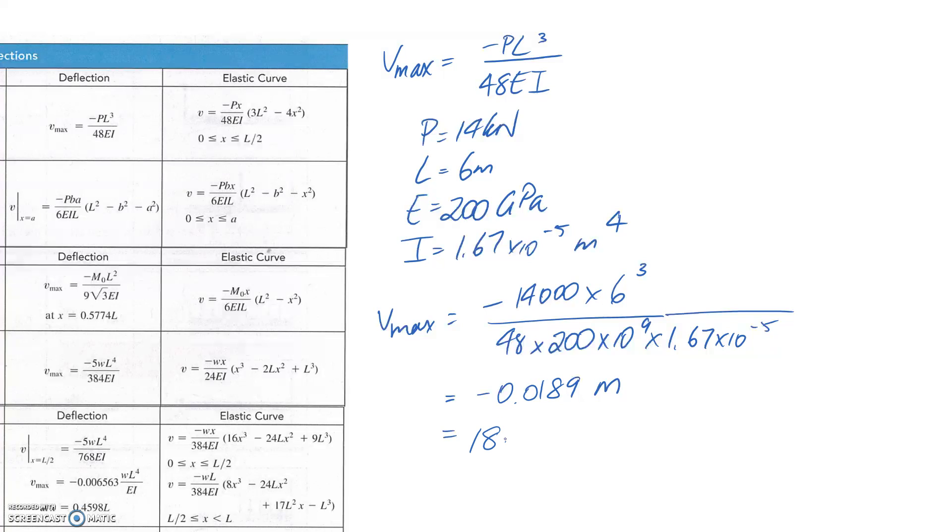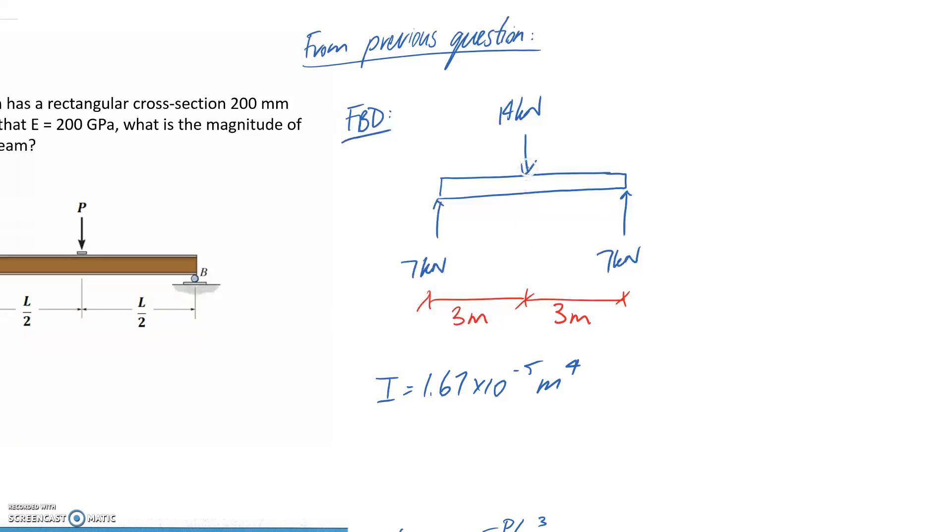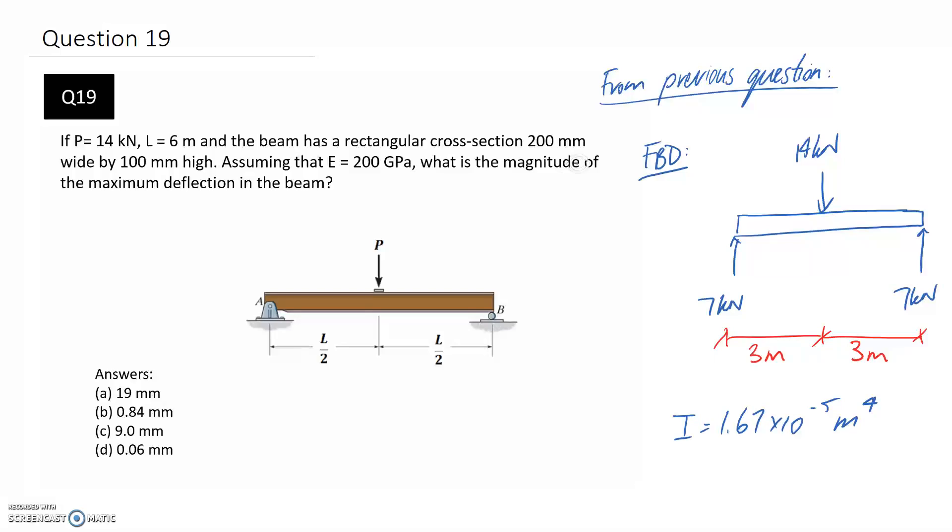And that would leave us with 18.9 millimetres. And I'll keep the negative here. So all this negative is telling us is basically our beam is going to deflect downwards, which is probably what you'd expect when you put a force on here. And we were asked for the magnitude, which is just the positive.